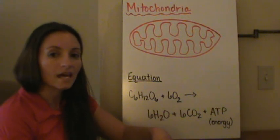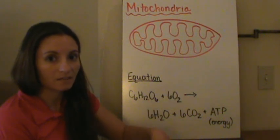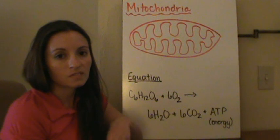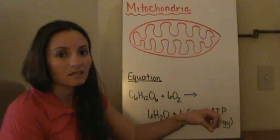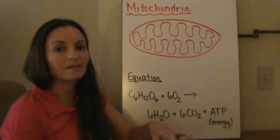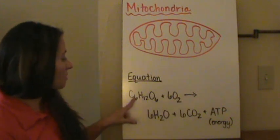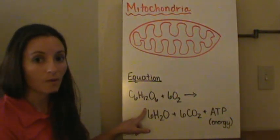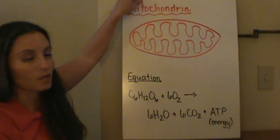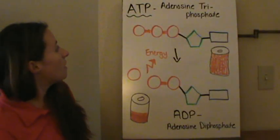The ATP molecule is the energy that's released from the glucose molecule when it's broken down. The energy is stored in the glucose bonds — the bonds between the atoms are where the energy is stored. So as we break this glucose molecule apart, that's what releases that energy.